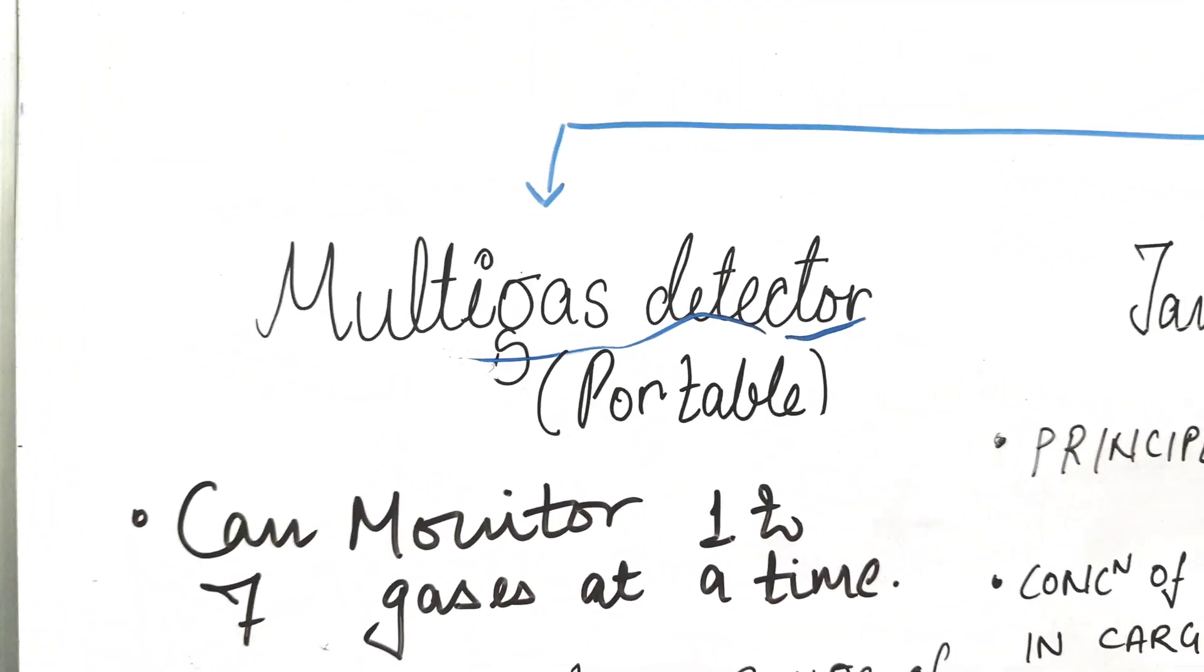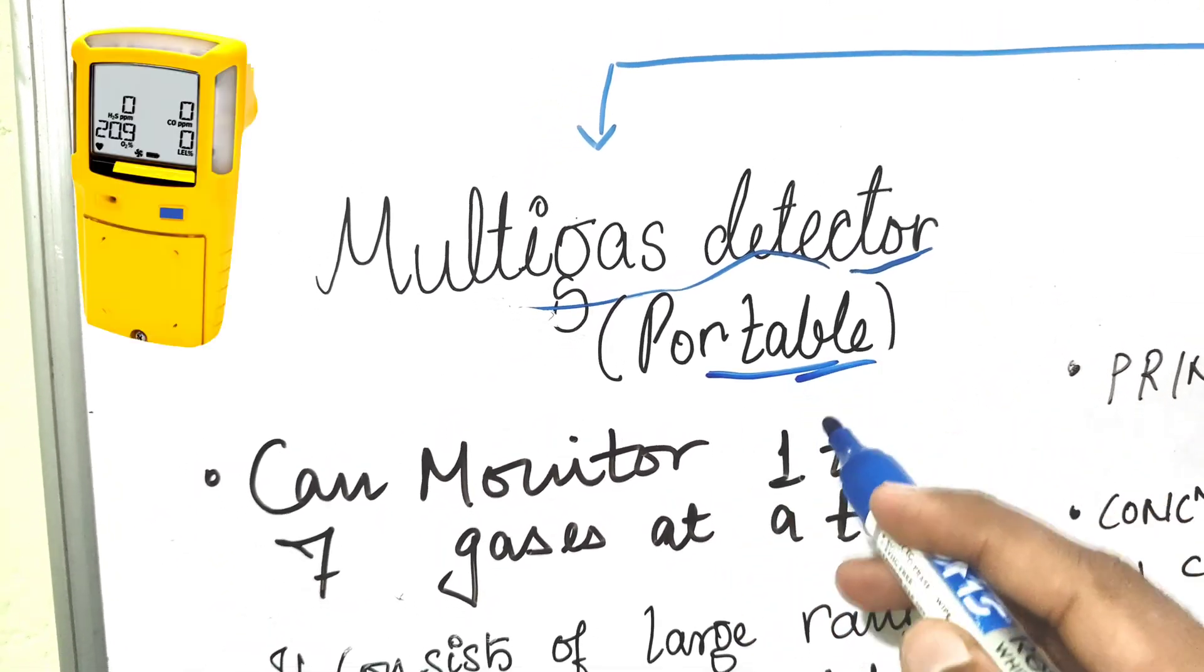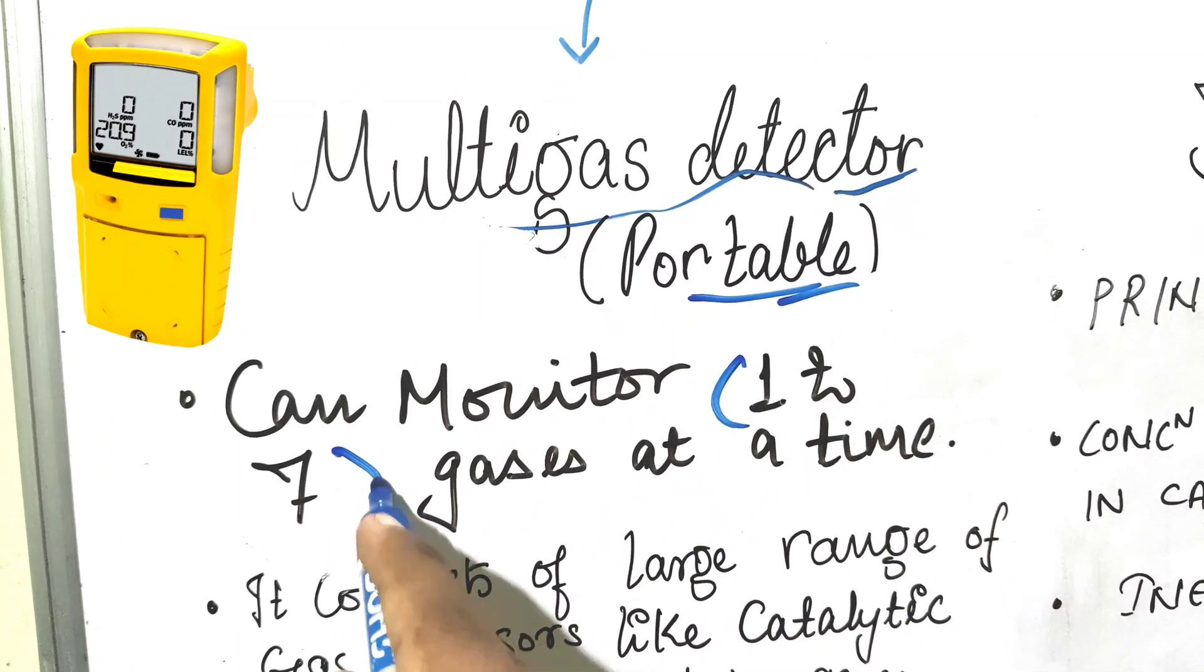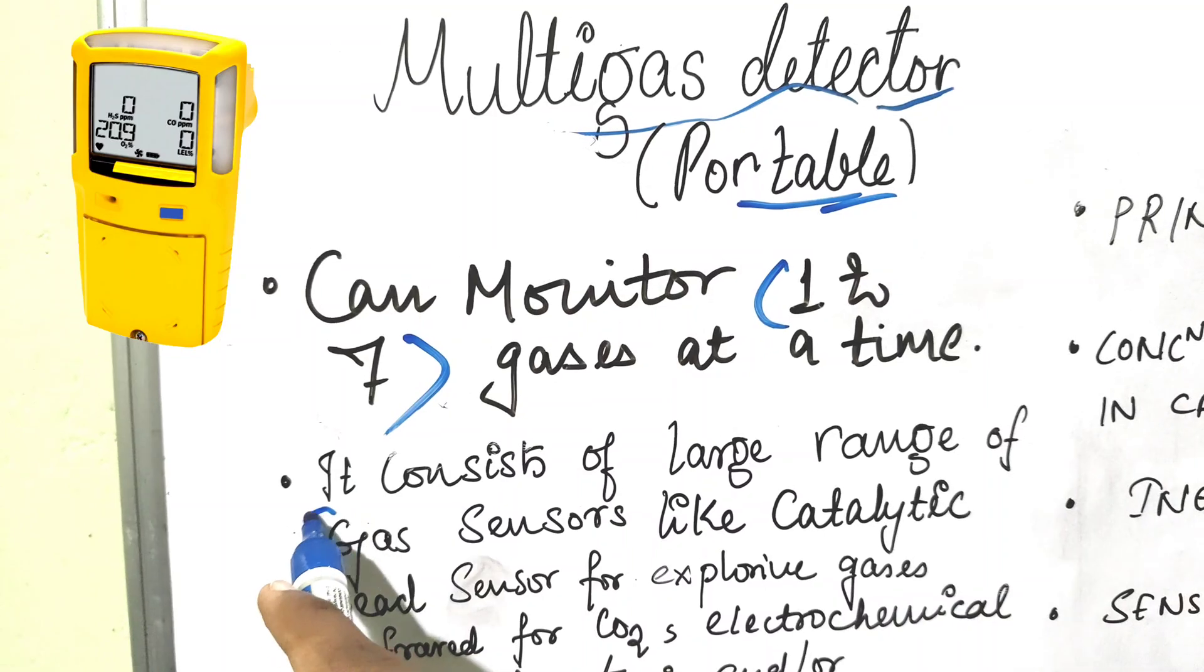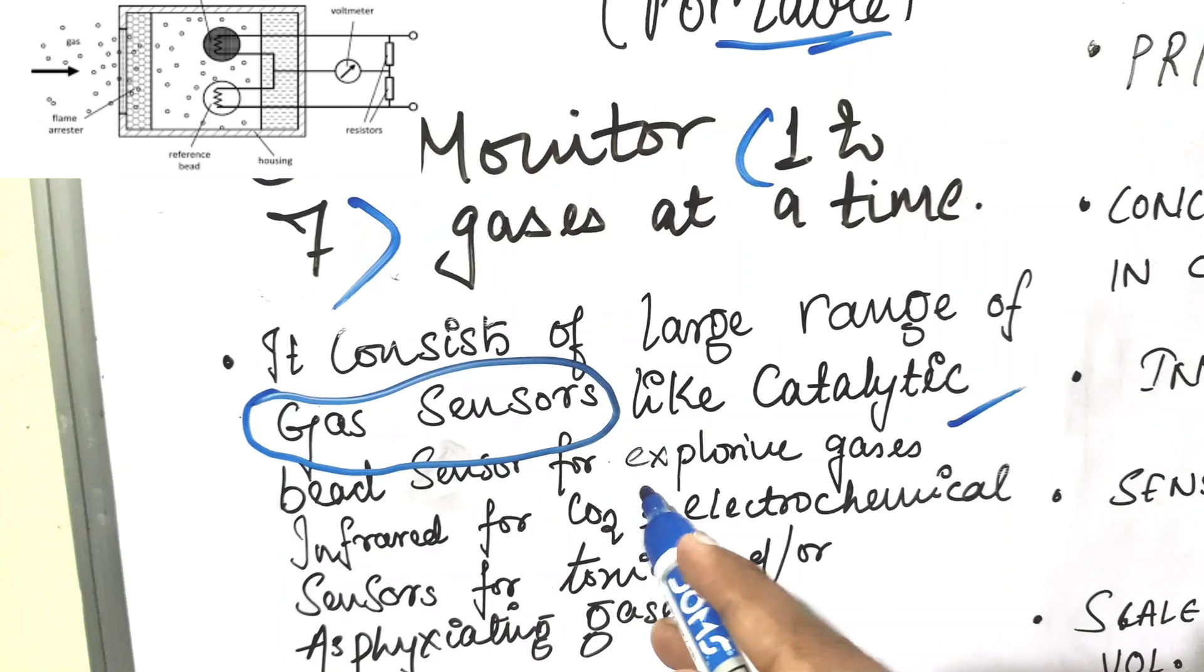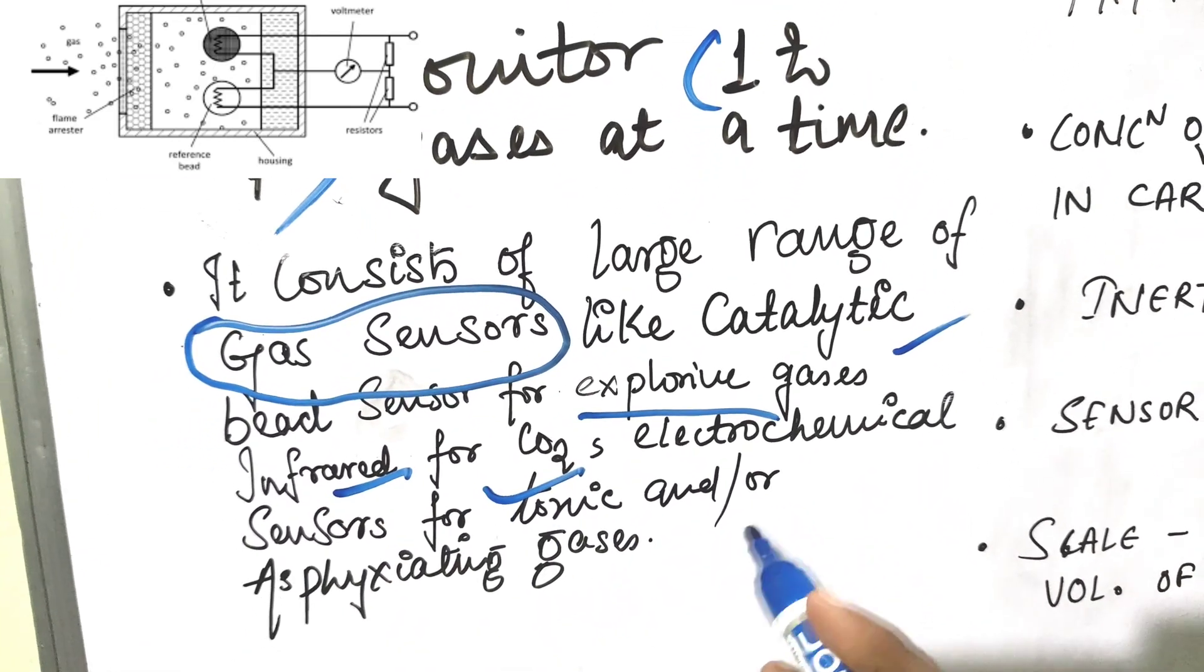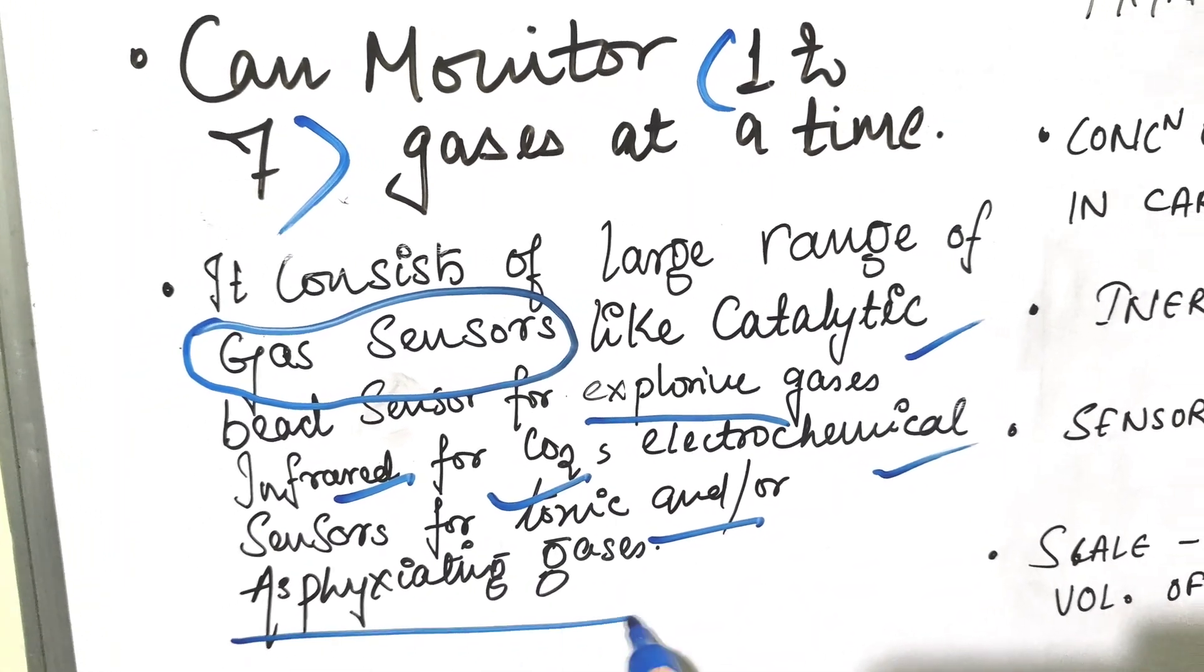First one is the multi-gas detector. This is a portable type. It can monitor one to seven gases at a time and consists of a large range of gas sensors like catalytic bead sensor for explosive gases, infrared for CO2, and electrochemical sensors for toxic or asphyxiating gases.